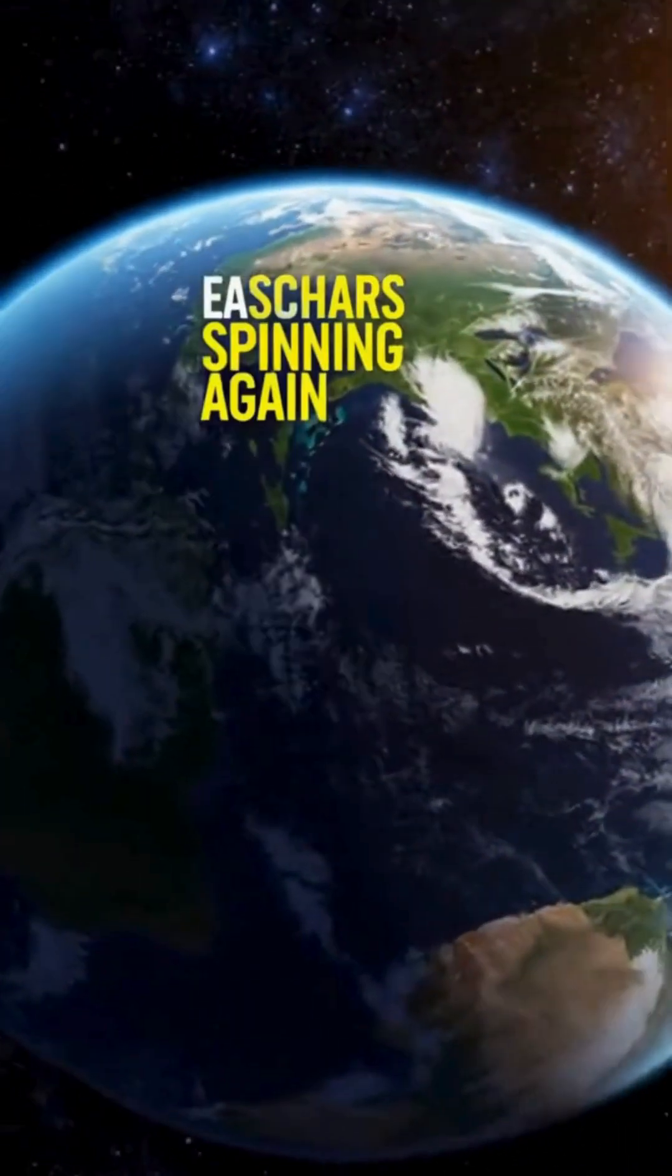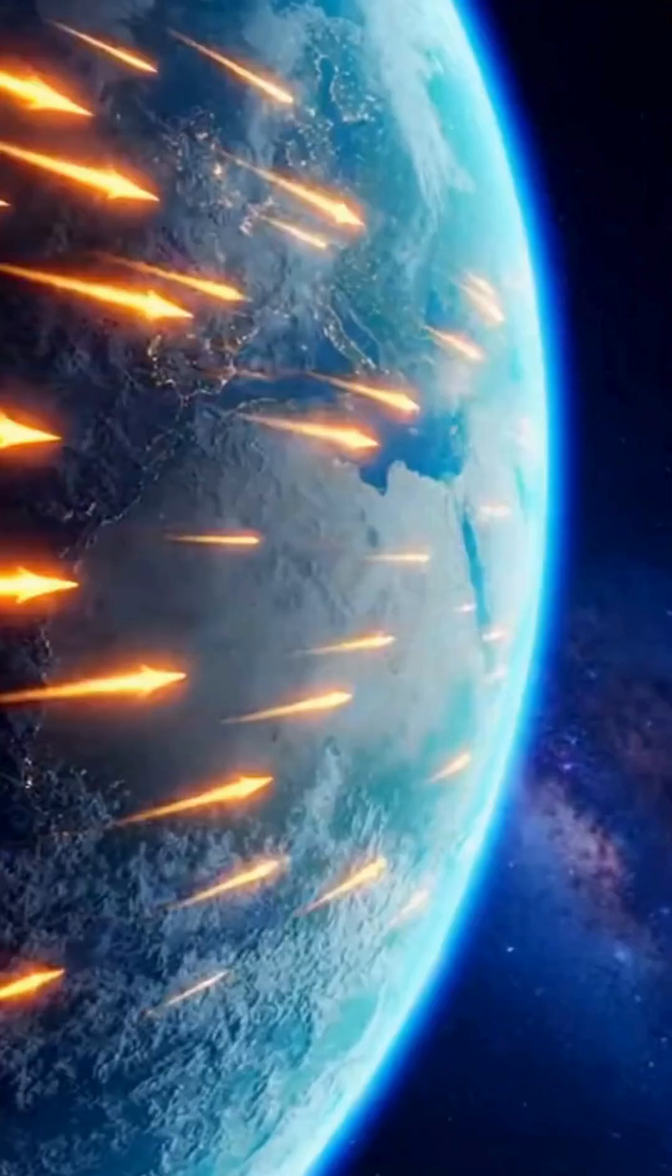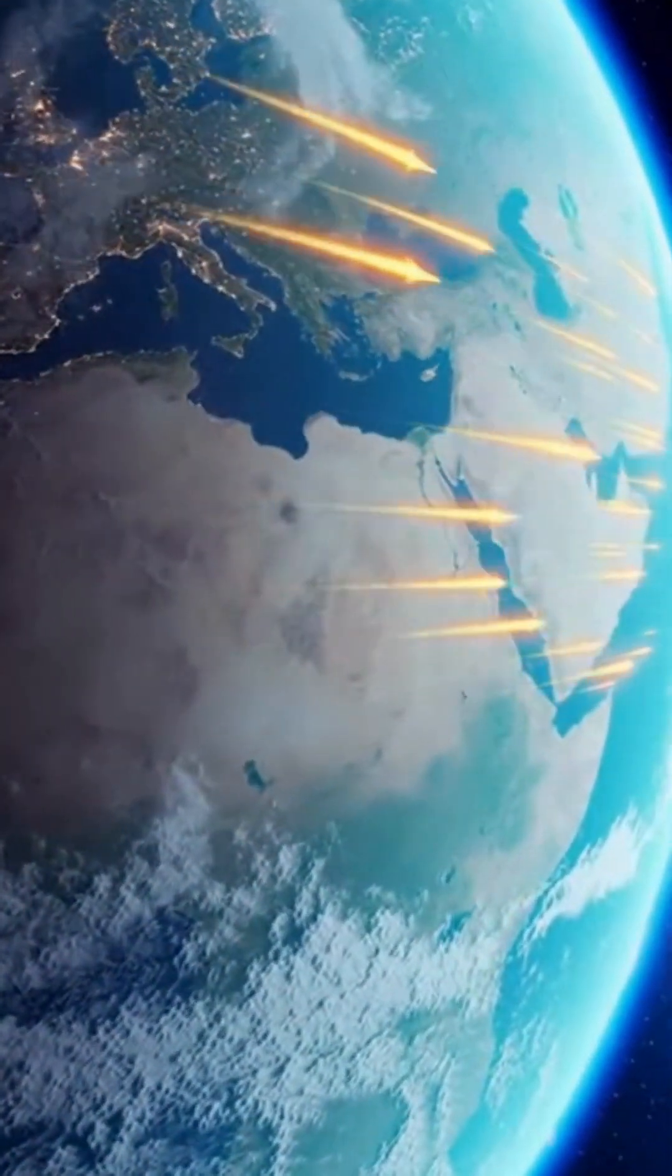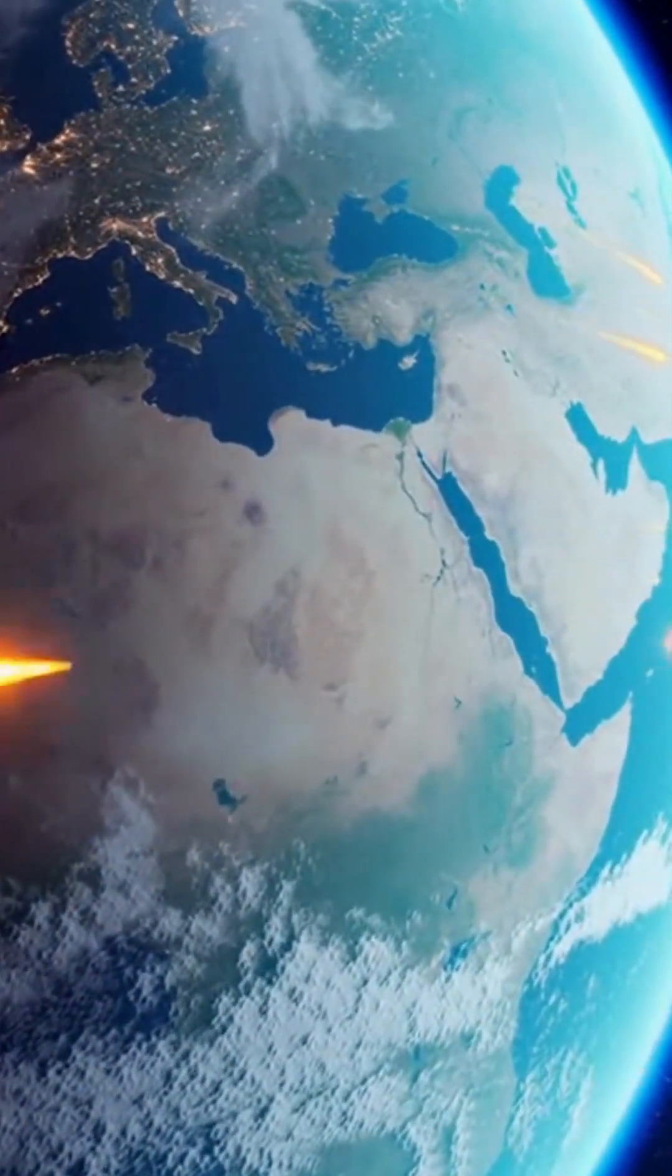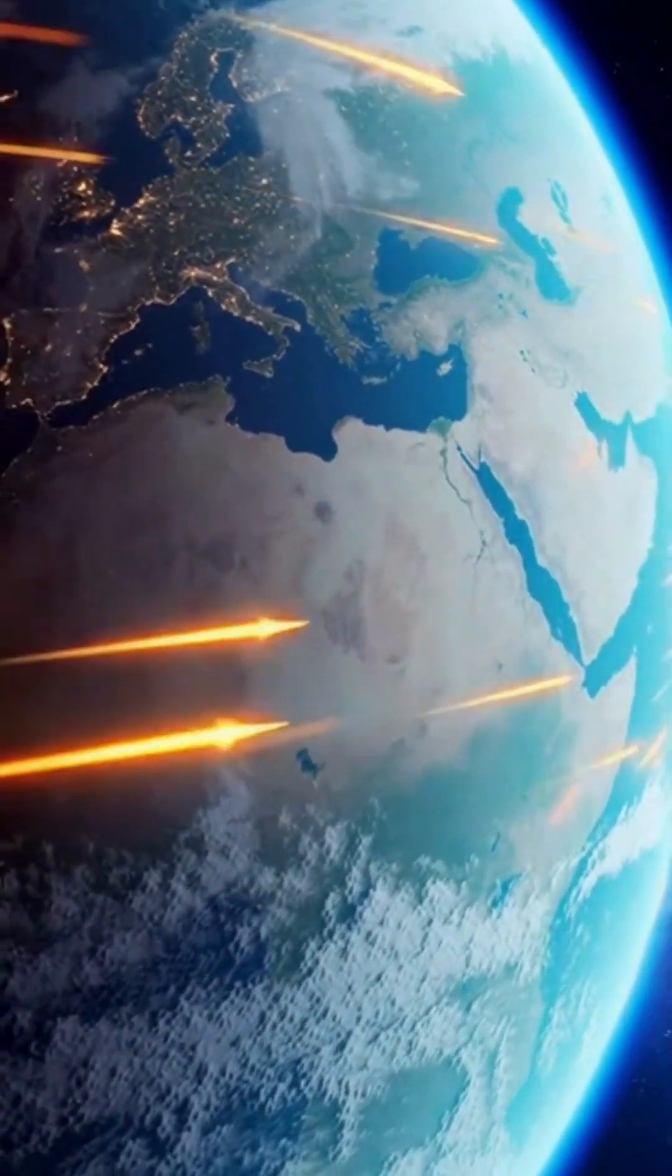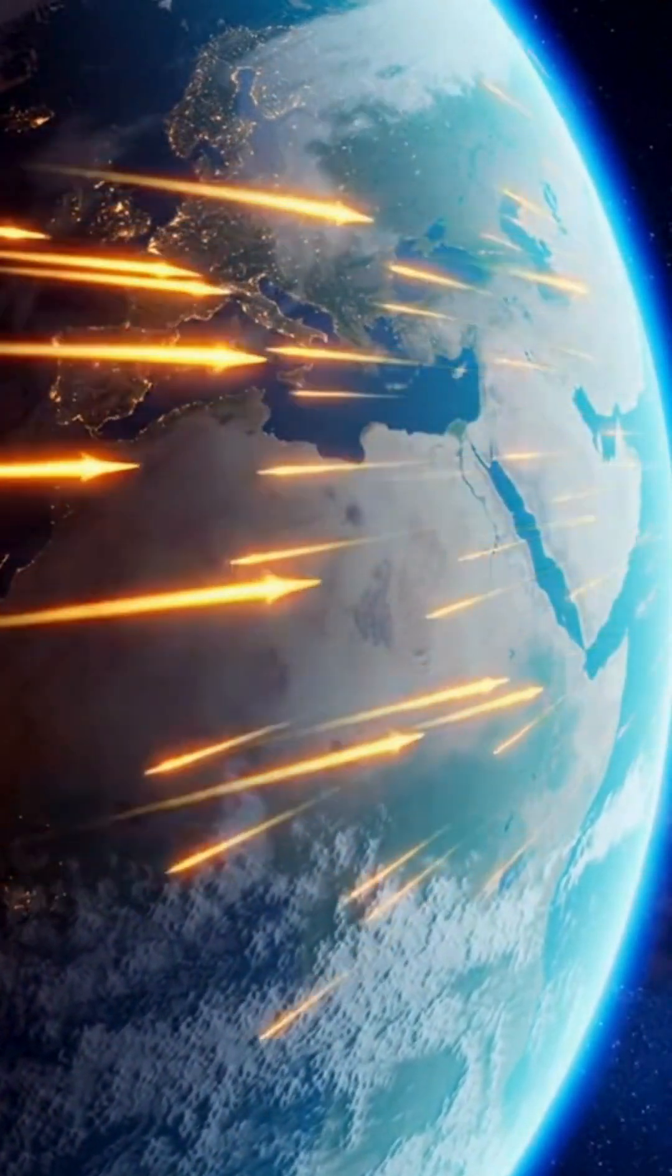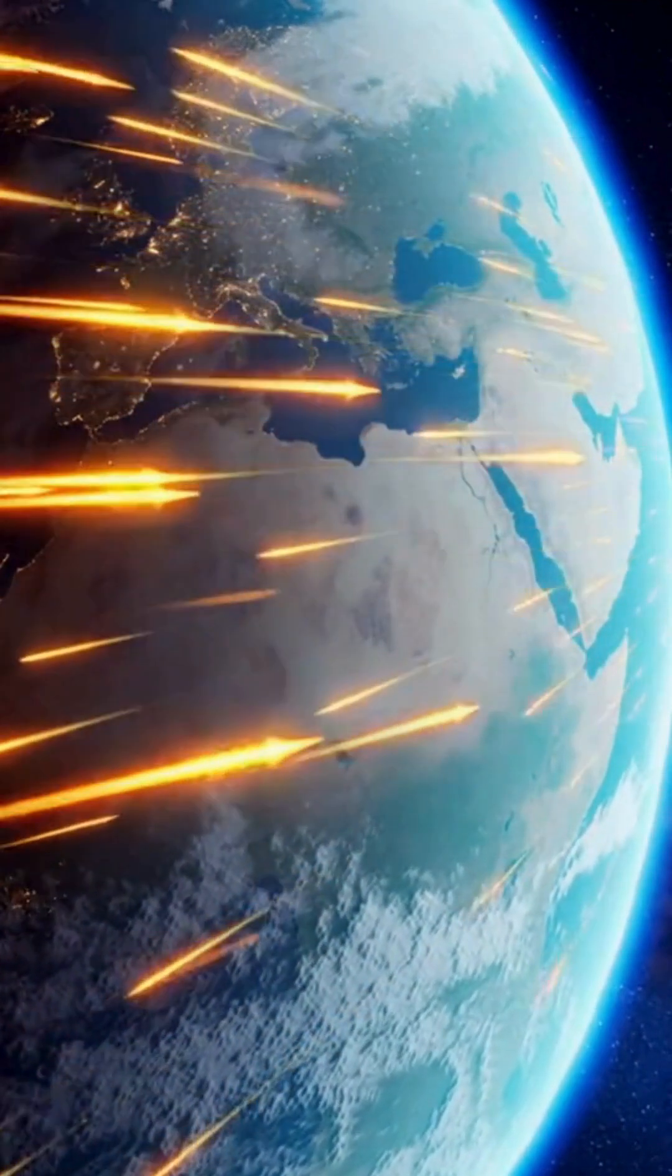Earth rotates at about 1,670 km per hour at the equator. We don't feel this speed because we move with it smoothly. But at moment zero, the planet suddenly stops. The solid ground freezes in place, but everything on it does not.